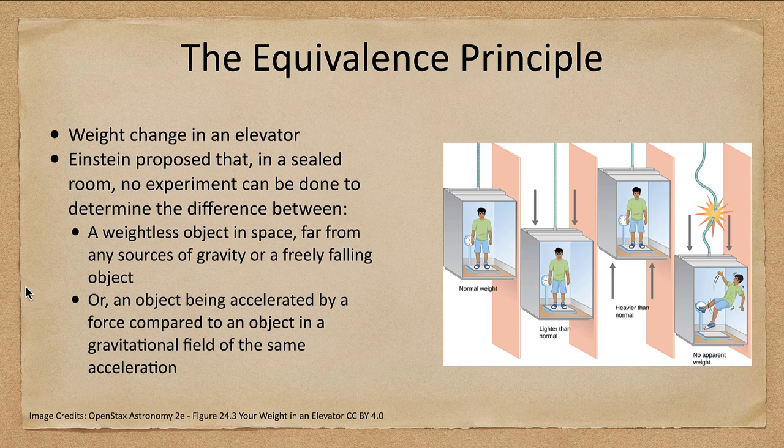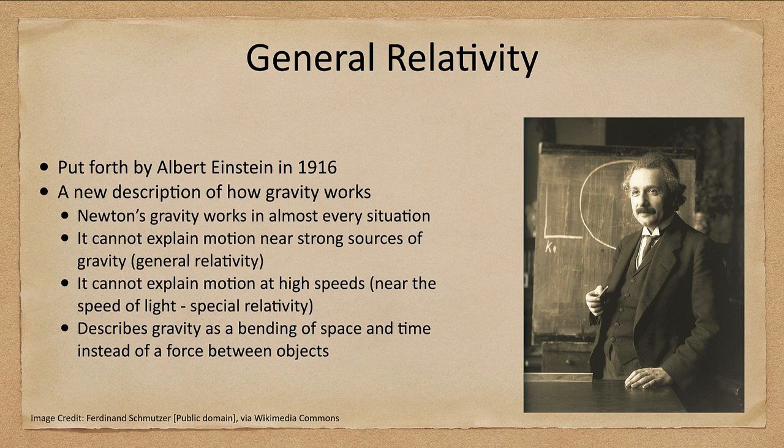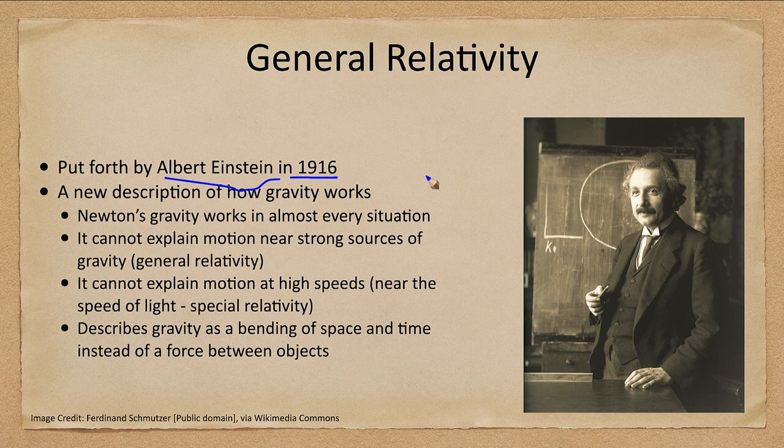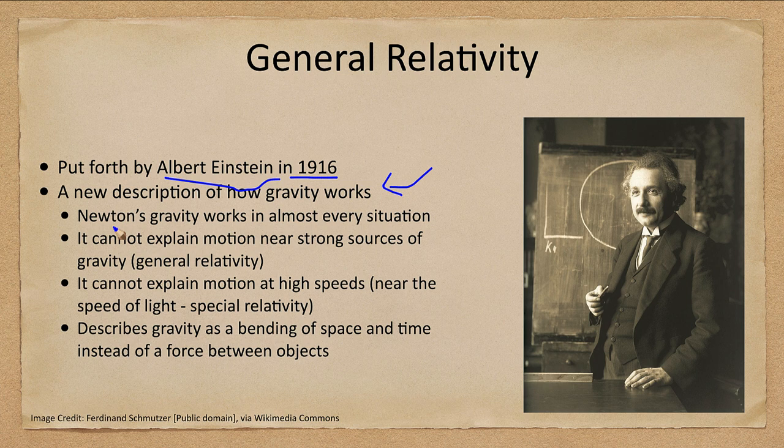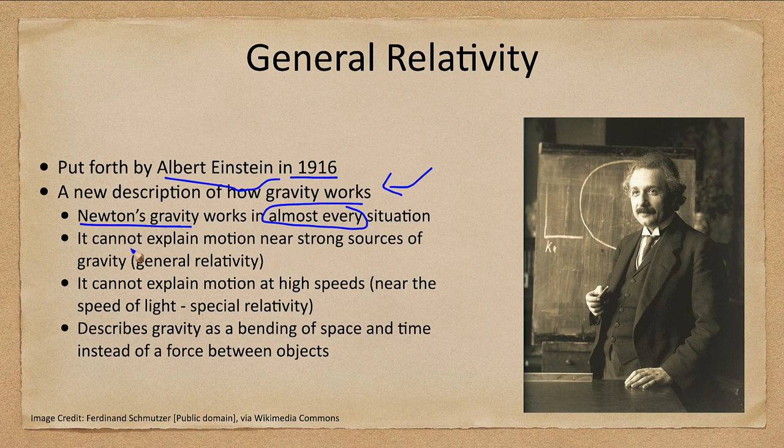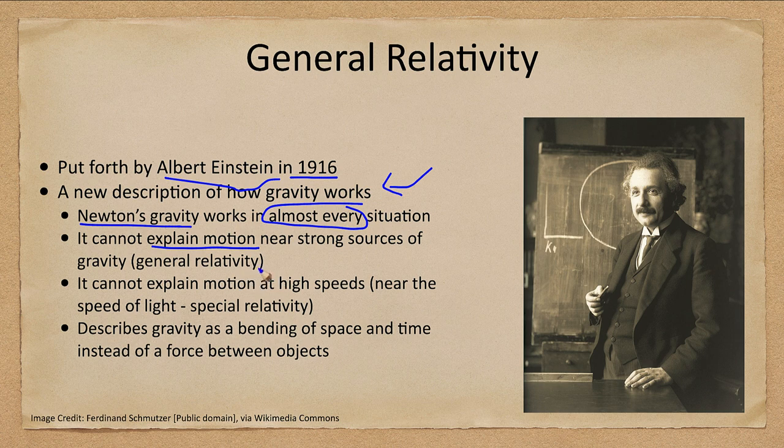So what is general relativity? Well, first of all, it was put forth by Albert Einstein about a hundred years ago in 1916, and it was a new description of the working of gravity. Now as I said, we previously studied Newton's gravity and it works in almost every situation. However, what it cannot do is explain motion near strong sources of gravity. That is general relativity, and that's what we're going to talk about in this lesson.